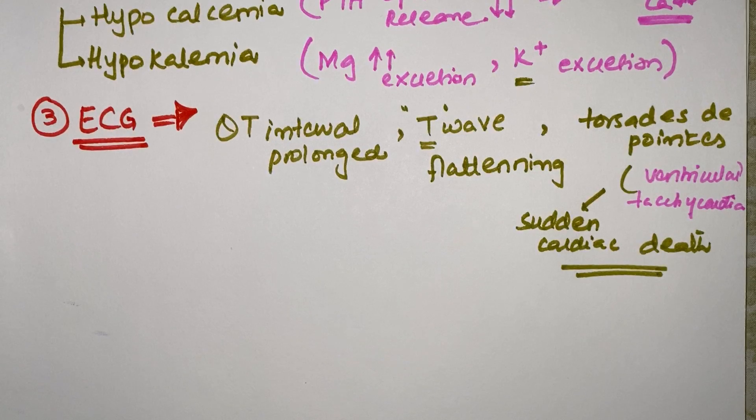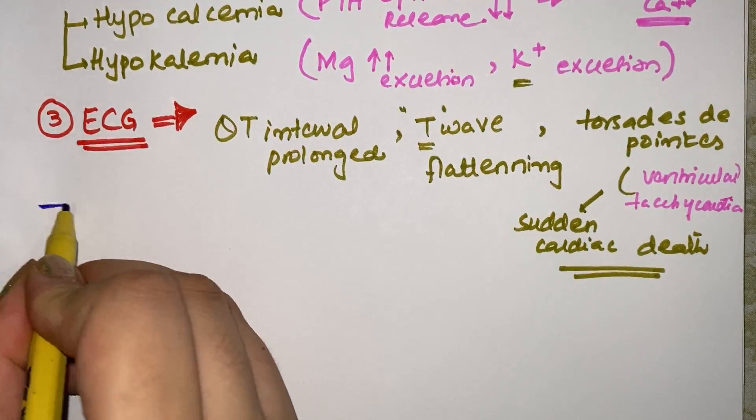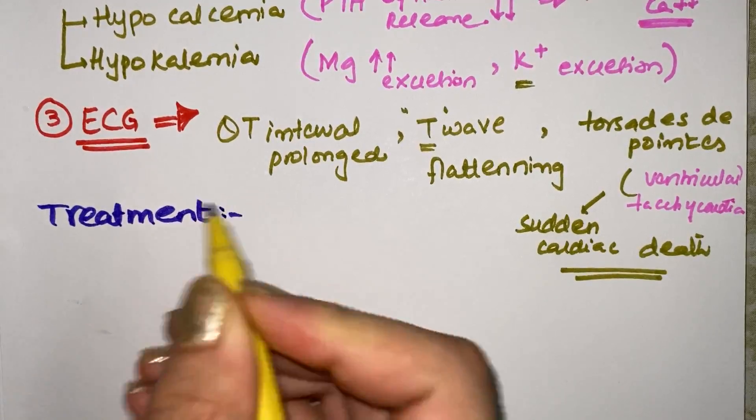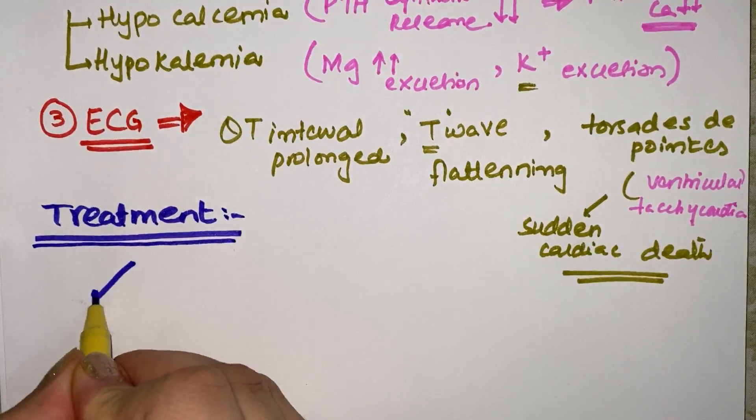Now we have discussed the clinical features and how we can diagnose it from ECG. Now we will discuss how we will treat a patient of hypomagnesemia. We will divide treatment in two major conditions.